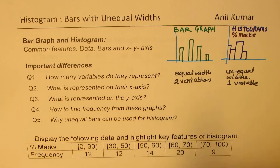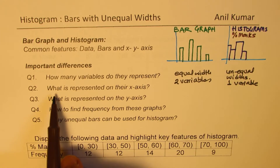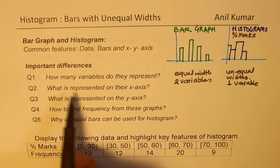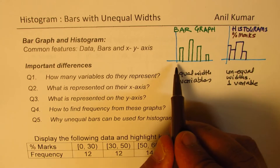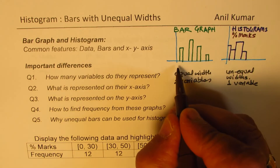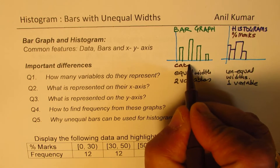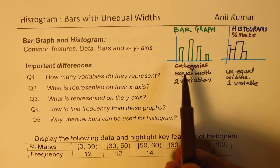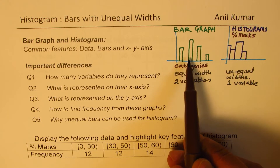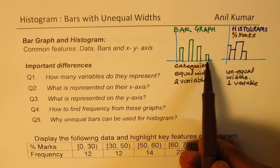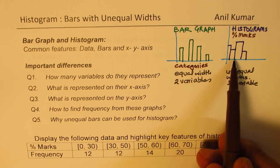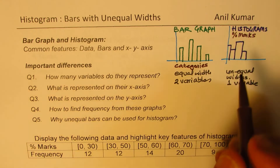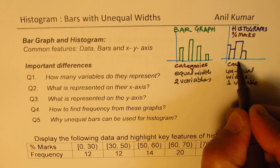In the bar graph case, let's also combine the answer for question two — what is represented on the x-axis? In a bar graph we have different categories. If you are talking about fruits, for example, we would have apples, oranges, bananas, grapes, and other things. These are all different categories.